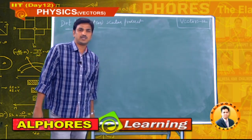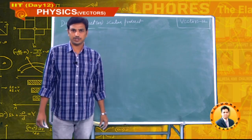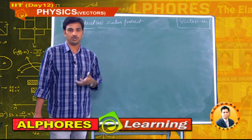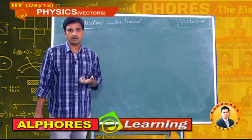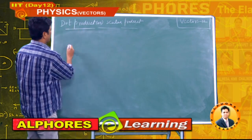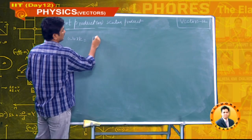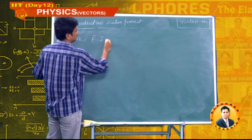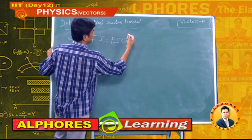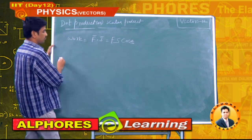Now let us see how dot product is useful in physics. Work is defined as W = F̄ · S̄ = Fs cosθ, where θ is the angle between force and displacement.